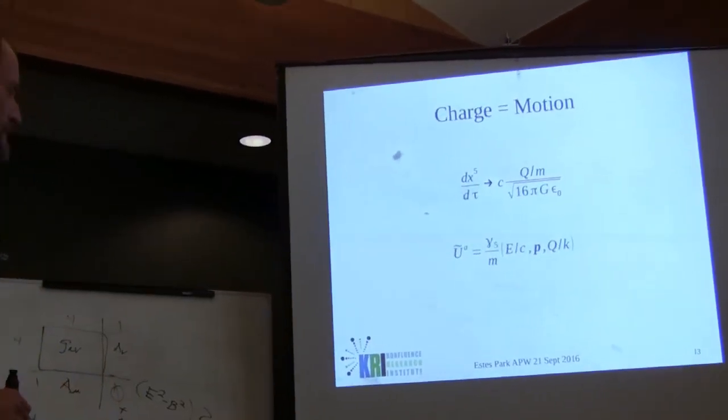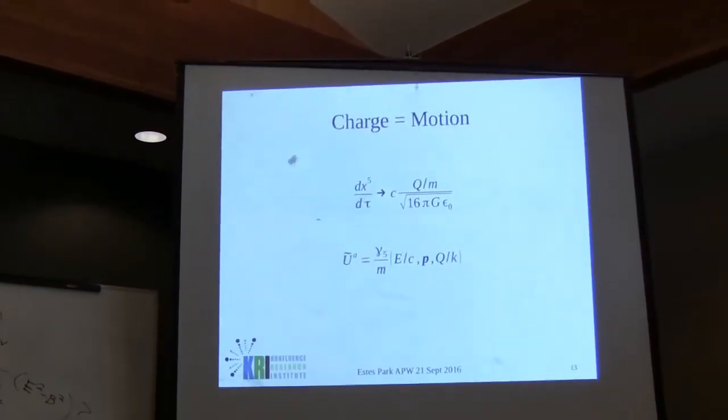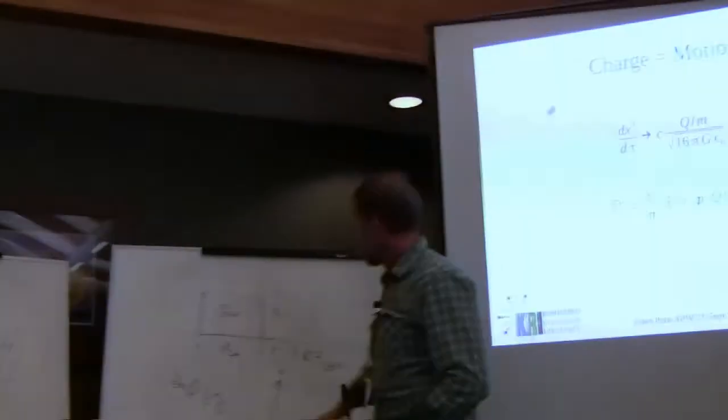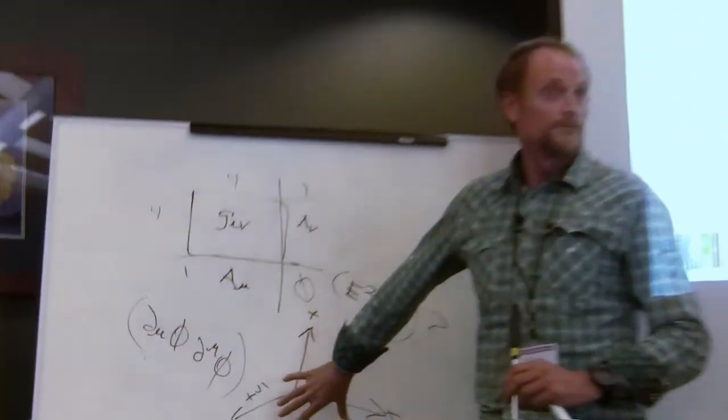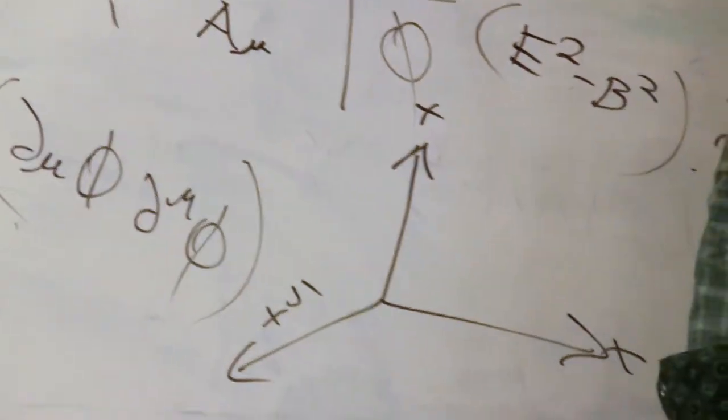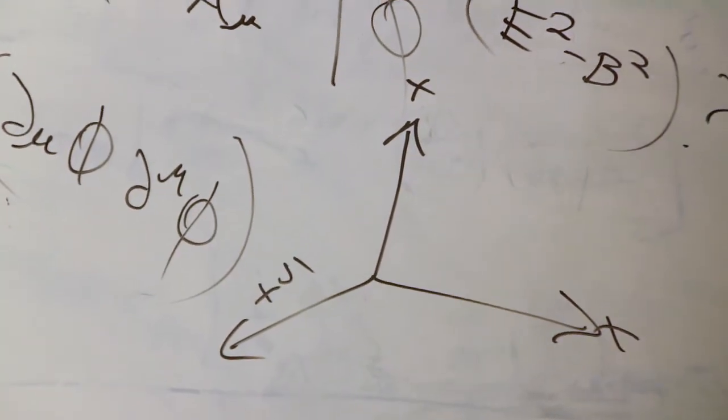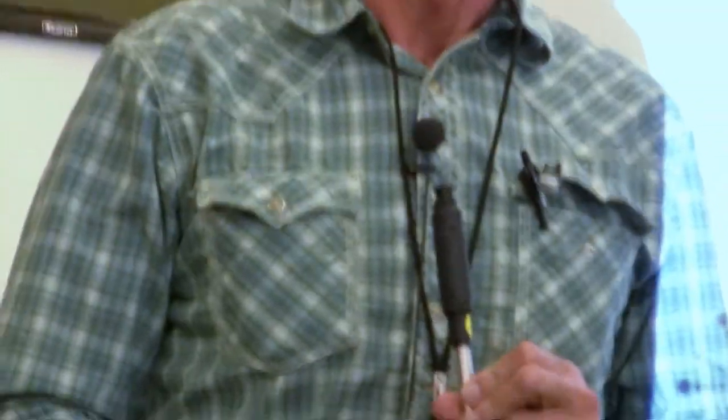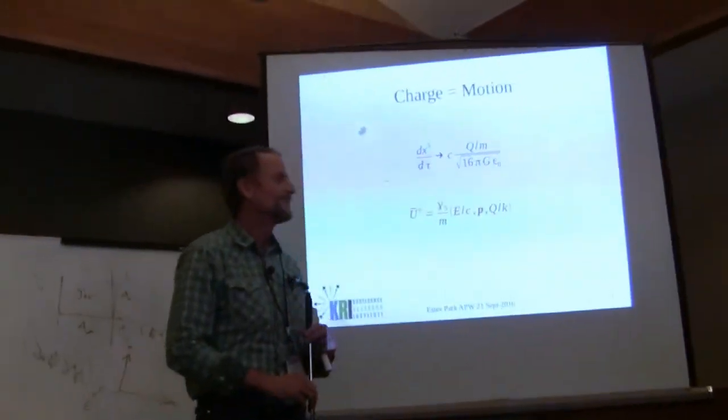So far, this is all old stuff from 1921. Kaluza had that in mind - not a compact fifth dimension but one that's macroscopic, similar to time. We don't see the time dimension, but we're moving through it. It's not a stretch to say the fifth dimension is like that. The cylinder condition says fields don't depend on the fifth coordinate, but that doesn't mean things aren't moving in the fifth coordinate.